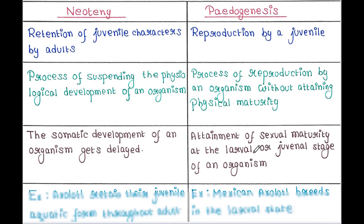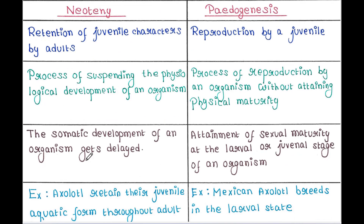In Neoteny, the somatic development of an organism gets delayed. Somatic development means it is the development of the body other than the sexual characters. In Paedogenesis, it is the attainment of sexual maturity at the larval or juvenile stage of an organism — so it is at a larval or juvenile stage, and it can start reproduction.